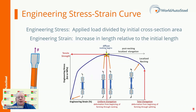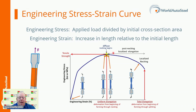Strength is defined as load divided by the cross-sectional area. Exactly when that cross-sectional area is measured during the test influences the results. It's easiest to measure the width and thickness of the test sample before starting the pull. At any load, the engineering stress is the load divided by this initial cross-sectional area. Engineering stress reaches a maximum at the tensile strength, which occurs at an engineering strain equal to uniform elongation.